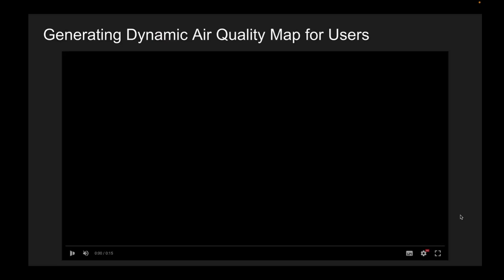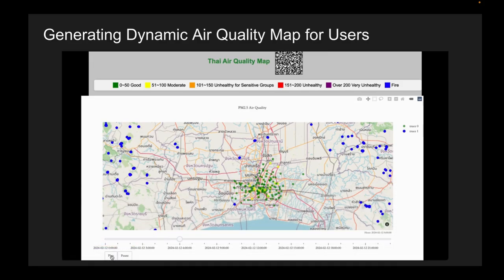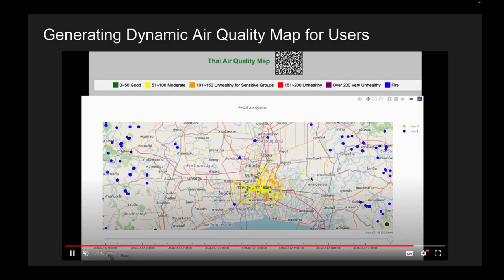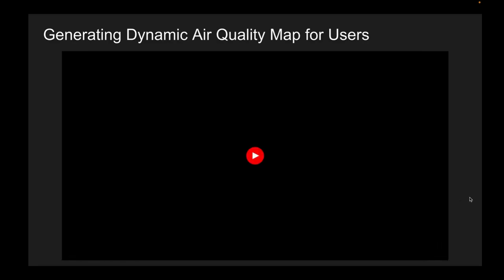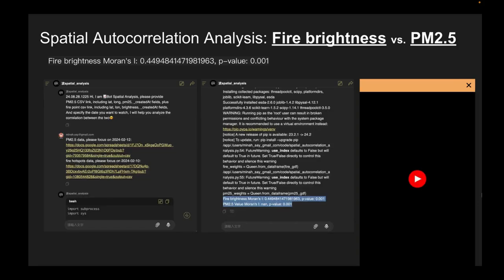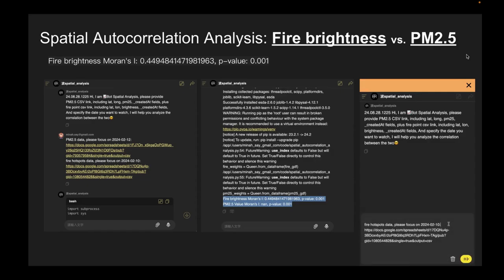Here you can see and correlate these two datasets — PM2.5 and the fire points — on the same website, visualized on this map. The orange indicators mean there is air pollution. Further, we provide a spatial autocorrelation analysis, meaning we can compare fire brightness versus PM2.5 to find out which days are really correlated to each other. For this we use spatial correlation analysis; the algorithm used is Moran's I indicator.